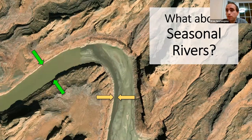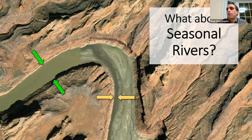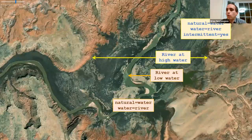When mapping a river, what do you do if it's seasonal or changes height over time? This imagery shows two different imagery collections stitched together — the image on the left was captured during high water and the image on the right during the dry season. If you have both high-water and low-water imagery available, you can use the intermittent tag on the parts of the river that are sometimes wet and sometimes dry.